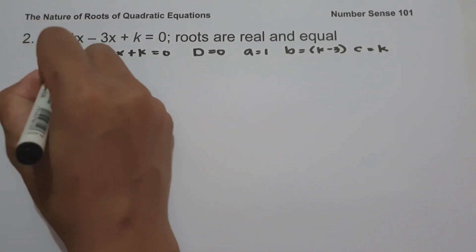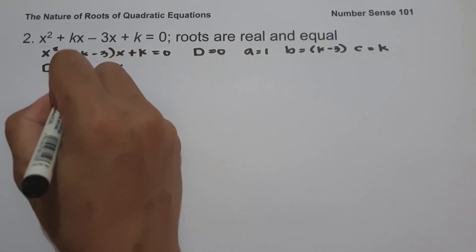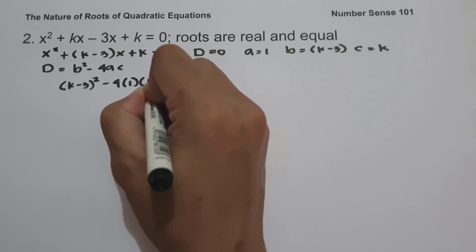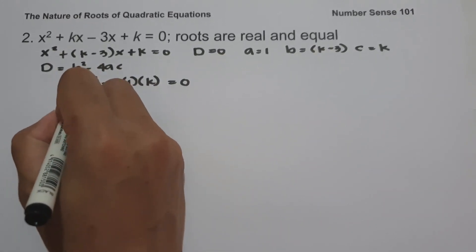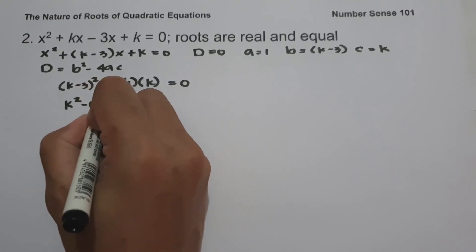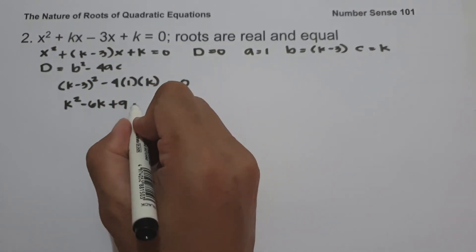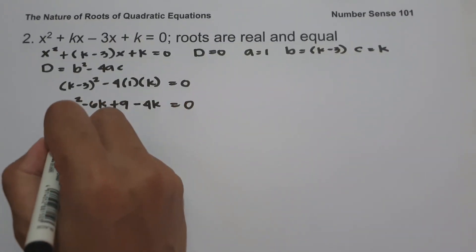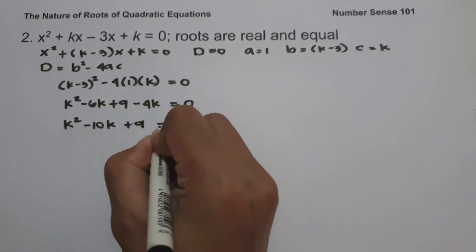And the formula for the discriminant is d equals b squared minus 4ac. So we have quantity k minus 3 squared minus 4 times a, which is 1, and c, which is k, equated to 0. Expanding the squared binomial: k squared minus 6k plus 9, minus 4k equals 0. Combining like terms gives k squared minus 10k plus 9 equals 0.